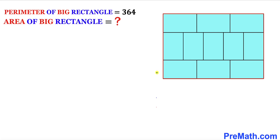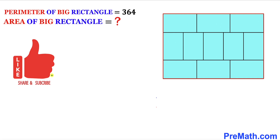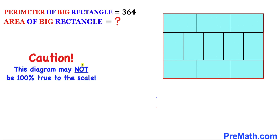Welcome to PreMath. In this video we have a big rectangle that consists of a bunch of identical tiny rectangles, such that the perimeter of this big rectangle is 364 units. Our task is to calculate the area of this big rectangle. Please keep in mind that this figure may not be 100% true to scale.